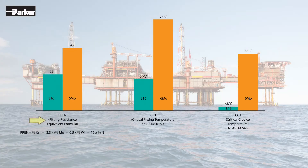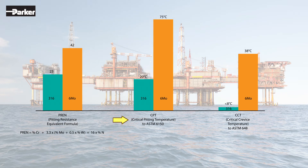Here is a comparative of corrosion performance indicators. The first indicator is called PREN, or pitting-resistant equivalent number, and is an indicator of the capability of an alloy to resist pitting, which is a form of localized attack. The higher the PREN number is, the more resistant the alloy is to pitting. As we can see here, the performance of 6MO is far superior to that of 316.